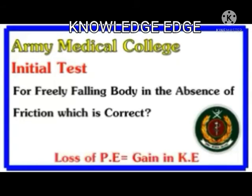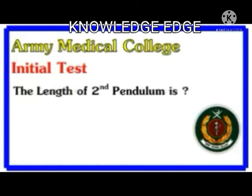Loss of potential energy is equal to gain in kinetic energy. The length of a second pendulum — what is the length of a second pendulum? It is 100 centimeters. You should also convert it to millimeters and meters and check what answer you get, because the exam can ask in meters, millimeters, or centimeters.